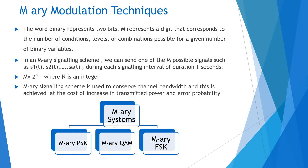In the M-Array modulation technique, the word binary represents two bits. M represents a digit that corresponds to the number of conditions, levels, or combinations possible for a given number of binary variables. In an M-Array signaling scheme, we can send one of M possible signals such as S1(t), S2(t) up to SM(t) during each signaling interval of duration T seconds.